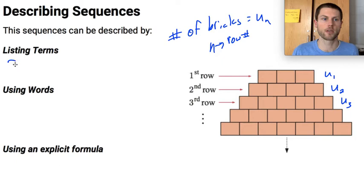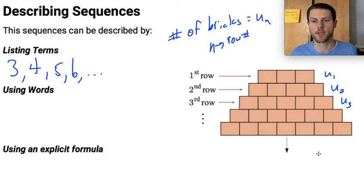So we can list these terms. If we are listing the number of bricks, we could say the first row is 3 bricks, then 4 bricks would be the second row, then 5 bricks, and then 6 bricks. And since this continues forever, we would have to write this ellipsis dot dot dot. And that's what that arrow means. It goes on forever here. So it would be just listing the terms of the sequence.